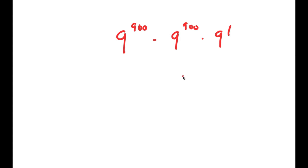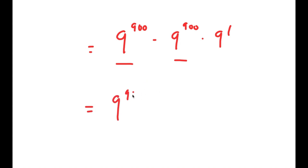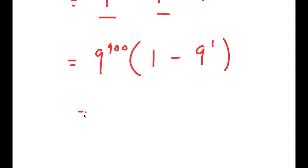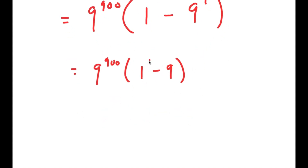Now these two terms both have 9 to the power of 900 in them, so I'm going to factor out 9 to the power of 900. I get 9 to the power of 900 times 1 minus 9 to the power of 1, and this equals 9 to the power of 900 times 1 minus 9, because 9 to the power of 1 is just 9. Since 1 minus 9 equals negative 8, I get 9 to the power of 900 times negative 8.